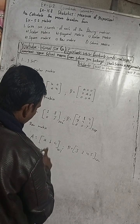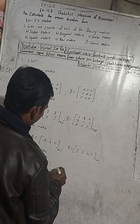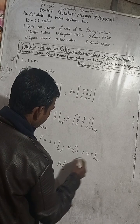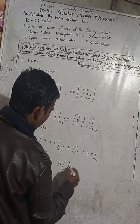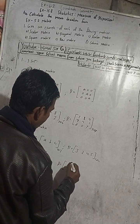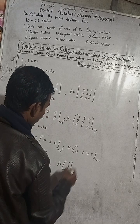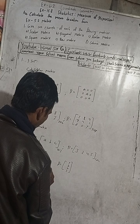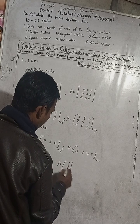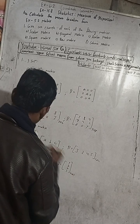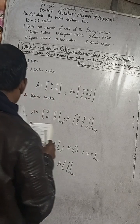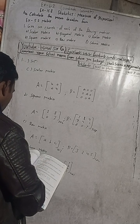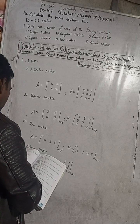A column matrix is equal to, for example, 3, 2, 4, 5, 7 in a single column. If row into column — how many rows? Three rows into one column, or four rows into one column. This is a column matrix because I only have one column. You can see this column matrix has only one column.